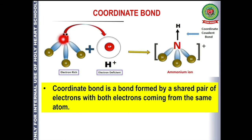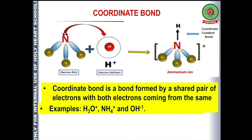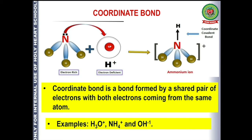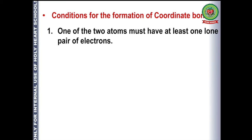As seen in the case of ammonia, nitrogen donates its lone pair to the electron deficient hydrogen, but the sharing is done by both atoms. The examples of coordinate bond are hydronium ion (H₃O⁺), ammonium ion, and hydroxyl ion. Now let us discuss the conditions for the formation of coordinate bond. The first condition is that at least one of the atoms should have a lone pair of electrons.